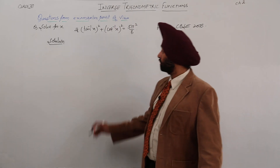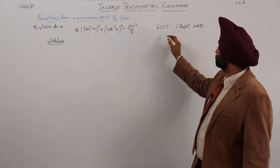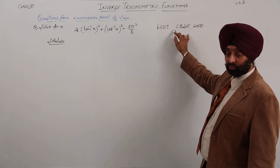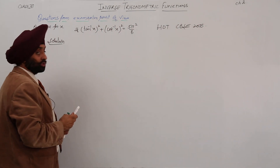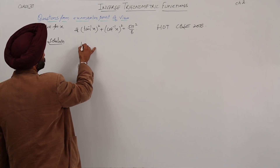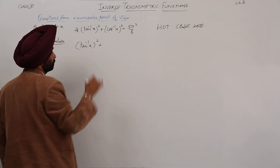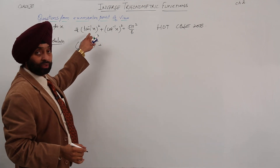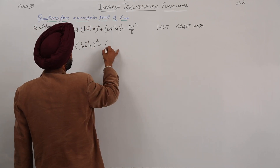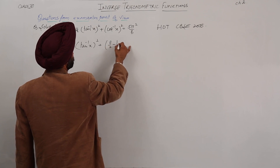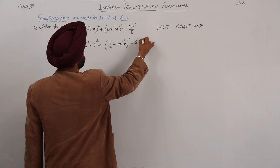We are again having a very nice question — indeed a little bit difficult. This was also in the HOT type of questions and in CBSE 2015. So now let's start with the question. We are having tan inverse x whole square plus — now here either you can change this term or we can use this term — we can write it as pi by 2 minus tan inverse x whole square, and this is equal to 5 pi square by 8.